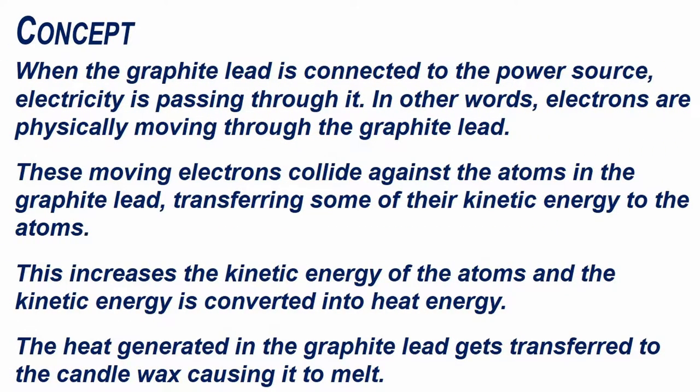When the graphite lead is connected to the power source, electricity is passing through it. In other words, electrons are physically moving through the graphite lead. These moving electrons collide against the atoms in the graphite lead, transferring some of their kinetic energy to the atoms.